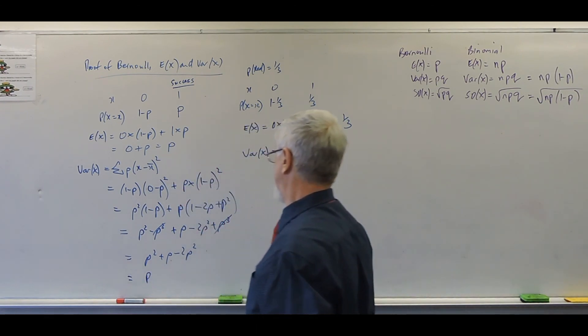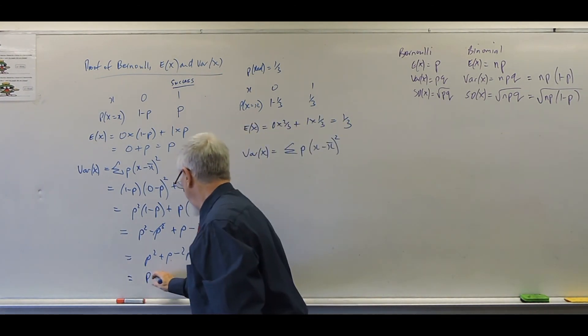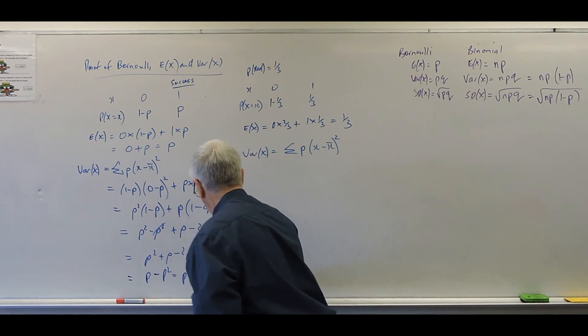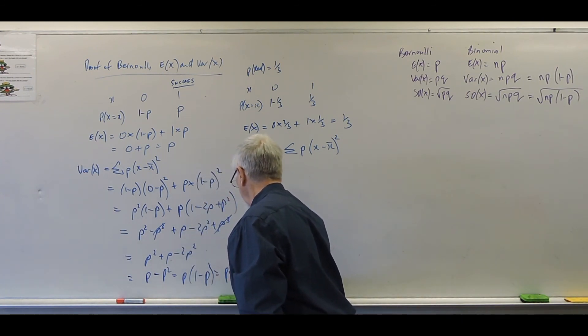Yeah. Well, we've got... Yeah. Minus p squared. Yeah. And then factor out the p. Yeah. So that's one minus p. And then that's p-q. Oh, okay. You know, I have a little more to get it. Okay. Yeah.